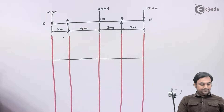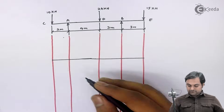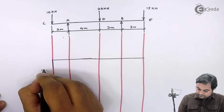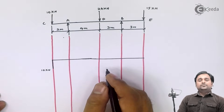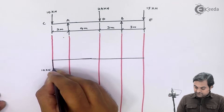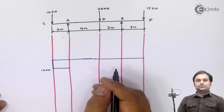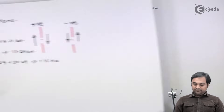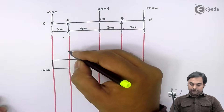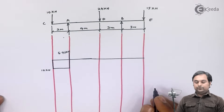SF at point C is minus 10, so 10 kN downward. This 10 kN will remain constant between C to A because there is no load between them. Next, at point A the value is plus 6.71 kN, so from negative it goes into positive — here I have 6.71 kN.